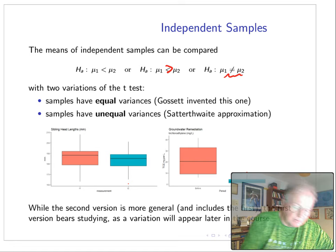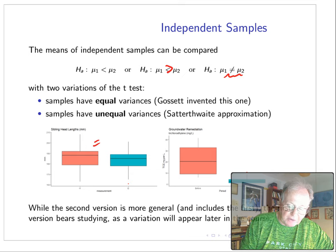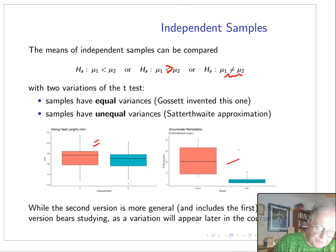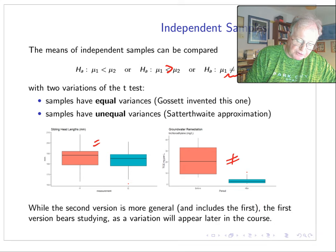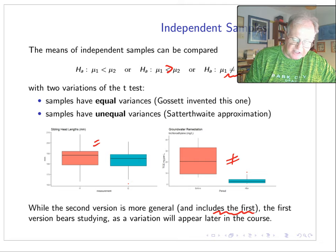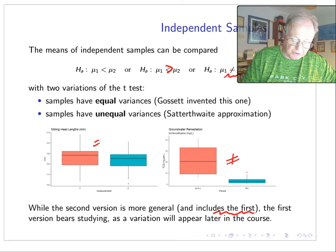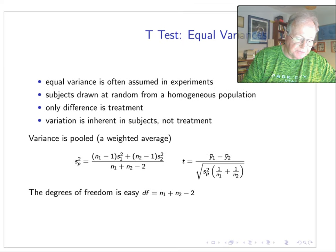There's two variations of this test. The other variation invented by Gossett assumes the samples have equal variances, or the newer version sometimes called the Satterthwaite approximation takes care of situations where there are unequal variances. The second version is a little more general and includes the first as a degenerate case, but the first version bears studying since a variation of this is going to show up a little bit later in this course of lectures.